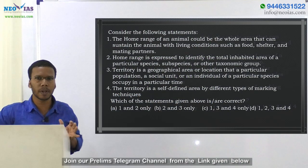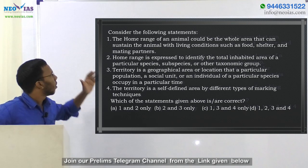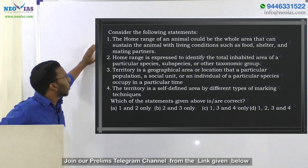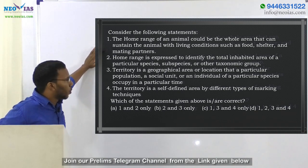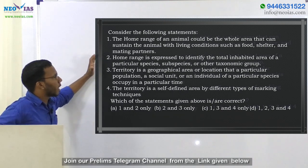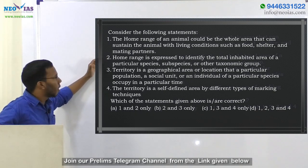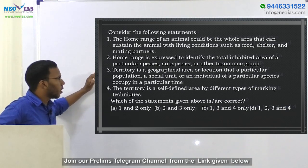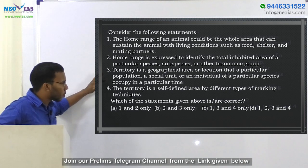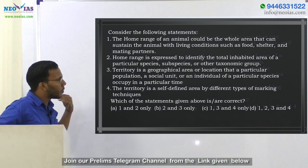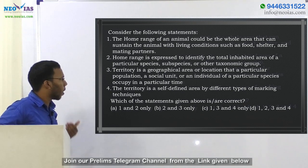This question regards the home range and territory concepts. First statement: the home range of an animal could be the whole area that can sustain the animal with living conditions such as food, shelter, and mating partners. Second statement: home range is expressed to identify the total inhabited area of a particular species, subspecies, or other taxonomy group. Third statement: territory is a geographical area or location that a particular population, social unit, or individual of a particular species occupies at a particular time. Fourth statement: territory is a self-defined area by different types of marking techniques.